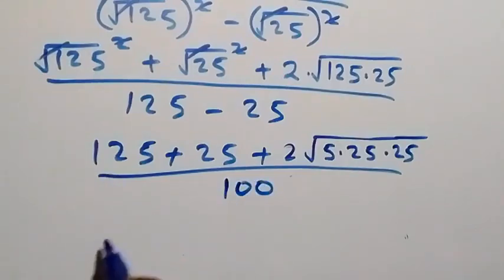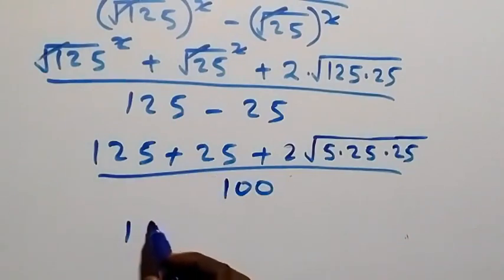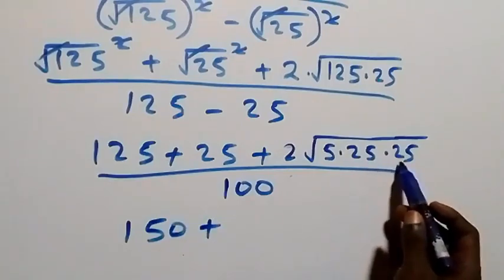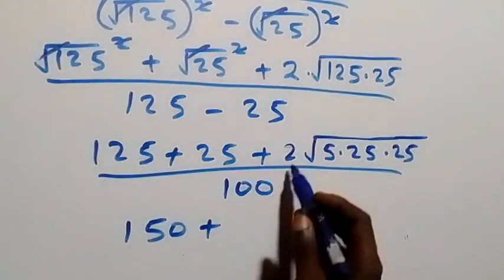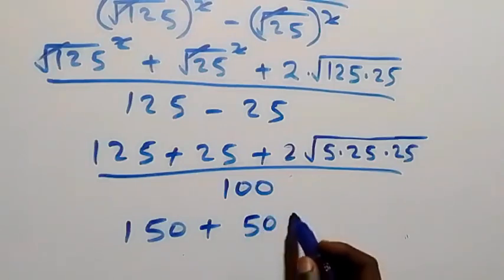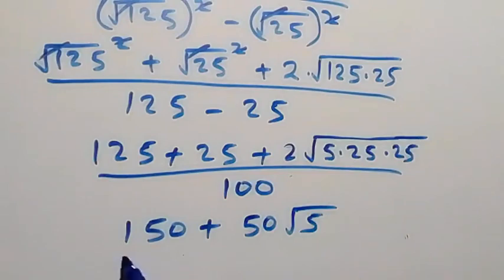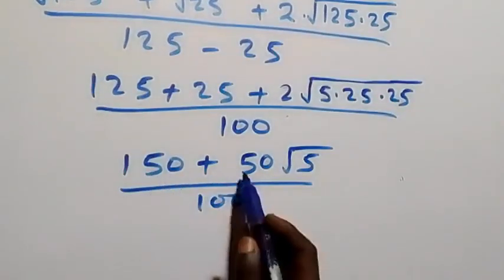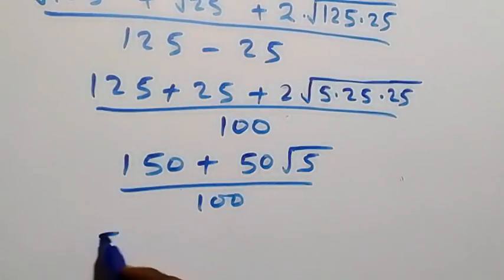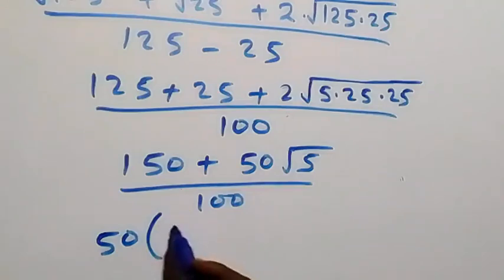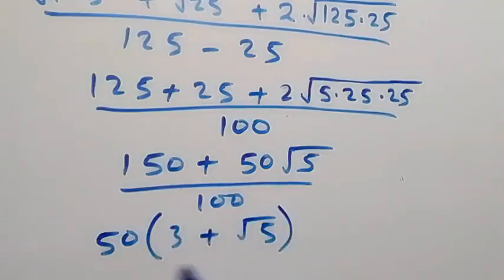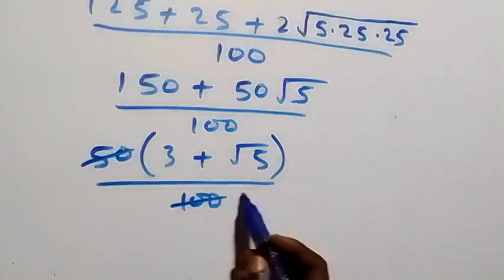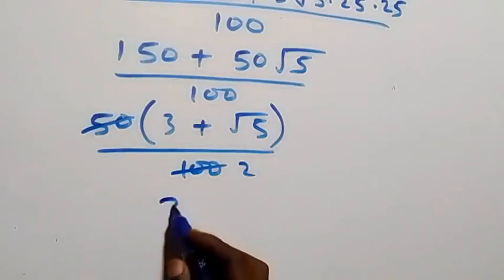Simplifying further: 125 plus 25 gives 150. For the cross term: root of 25 times 25 times 5 is 25 root 5, times 2 gives 50 root 5. So we have 150 plus 50 root 5 over 100. Factoring out 50: 50 times (3 plus root 5) over 100.